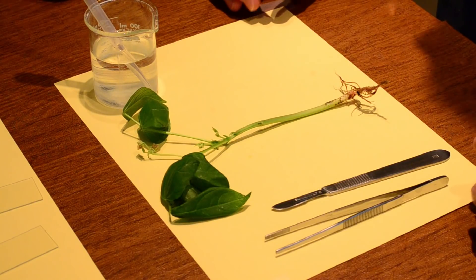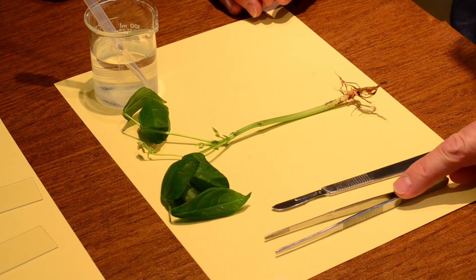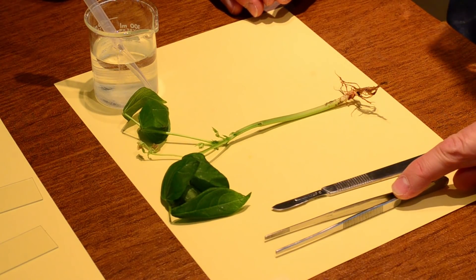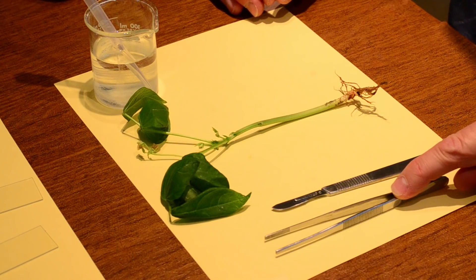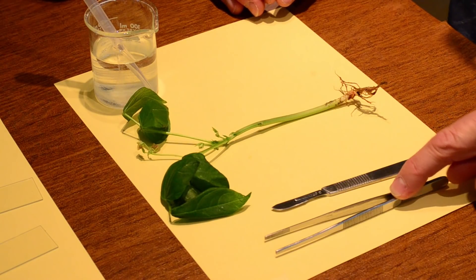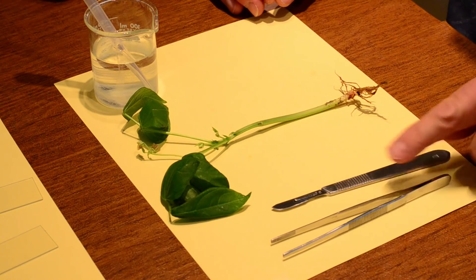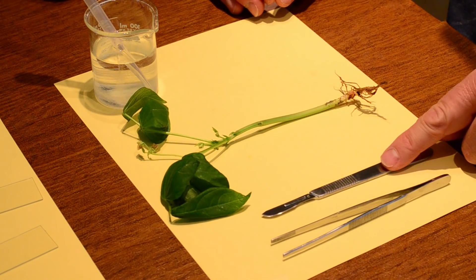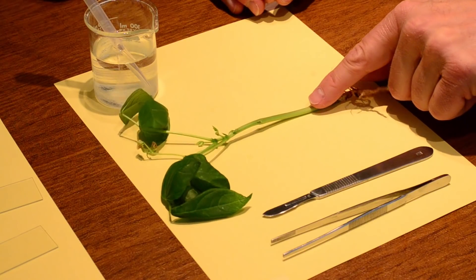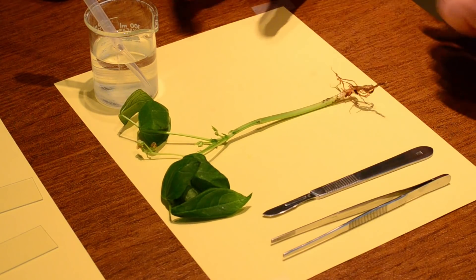Alright, here's the tools that we're going to have. We're going to have some forceps to hold the plant. So we do not have a scalpel in hand and our fingers on the plant. We're going to be using the tools. So we've got our forceps, our sharp scalpel that we're going to be very careful with, our plant, and a water dropper.